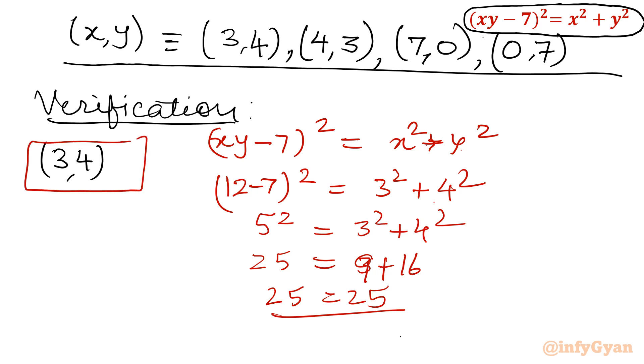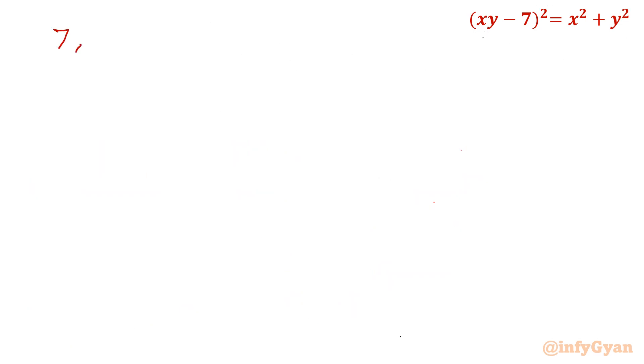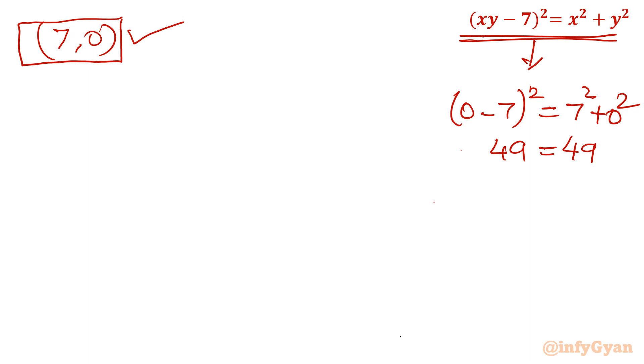Because this equation is symmetrical, 4 comma 3 is also true. Now come to 7, 0 and 0, 7. I will consider 7 comma 0. If I'm putting directly 7 comma 0, so 0 minus 7 whole square is equal to 7 square plus 0 square. Minus 7 square is 49, equals 49. True. So this pair is also true. Because the equation is symmetrical, 0 comma 7 is also true.